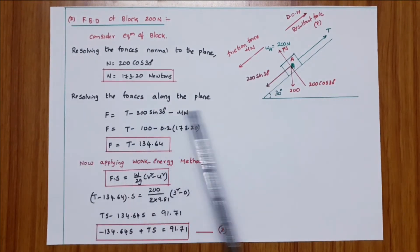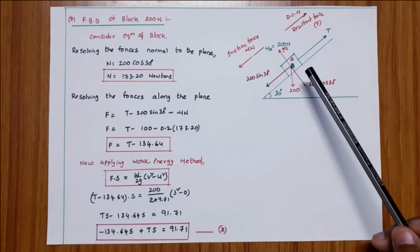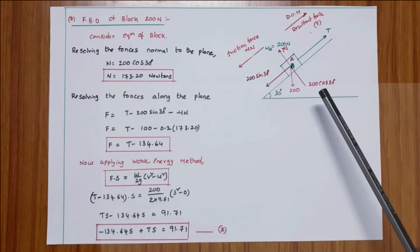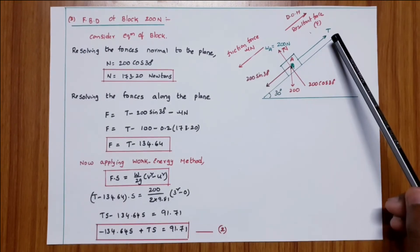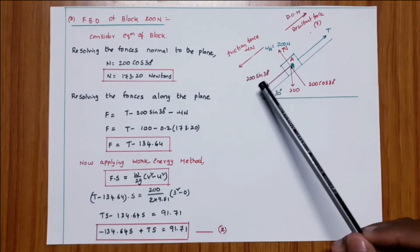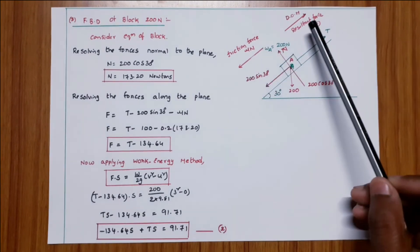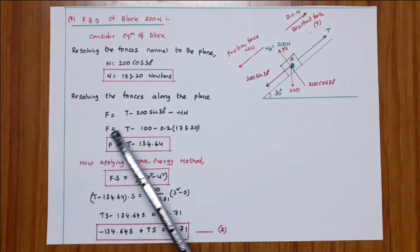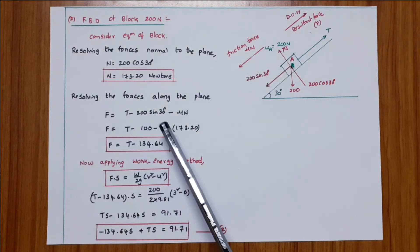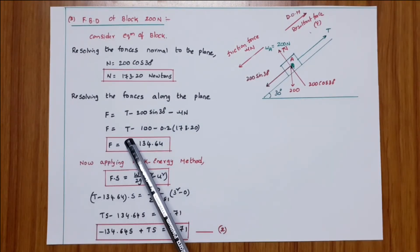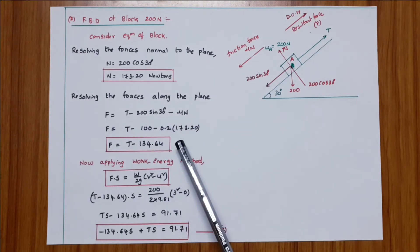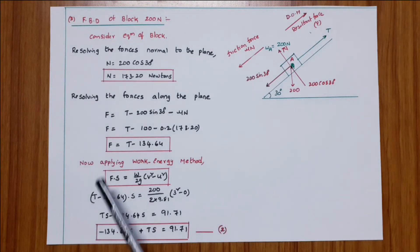Resolving forces along the plane for block A: the forces acting are T, 200 sin 30, and mu×N. T is the force in the direction of motion (positive). Friction force and 200 sin 30 act opposite to the direction of motion (negative). So F equals T minus 200 sin 30 minus mu×N equals T minus 100 minus 0.2 × 173.20. The resultant force F equals T minus 134.64.